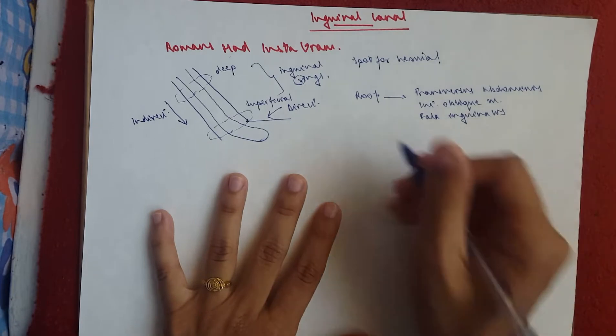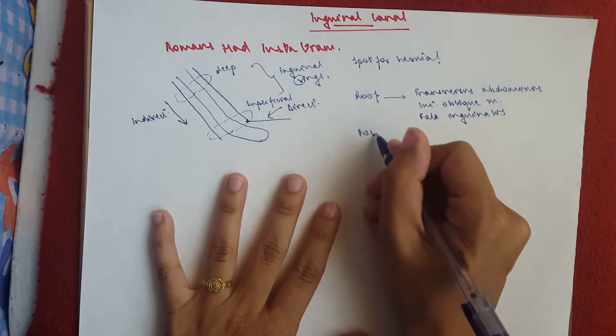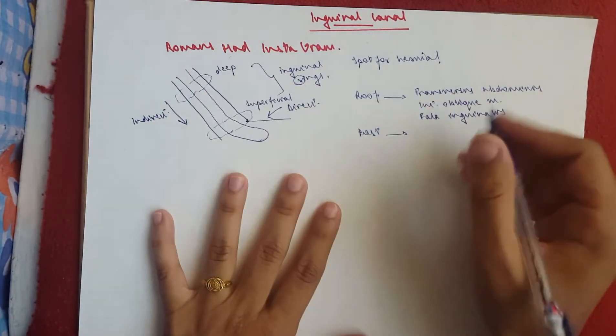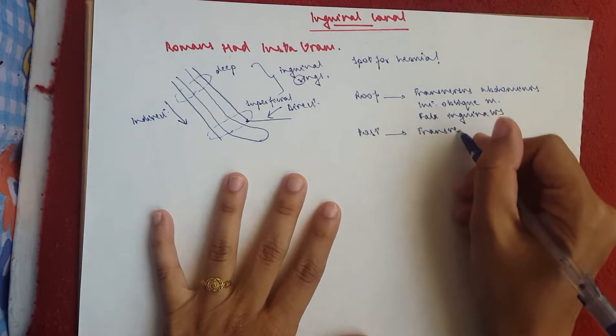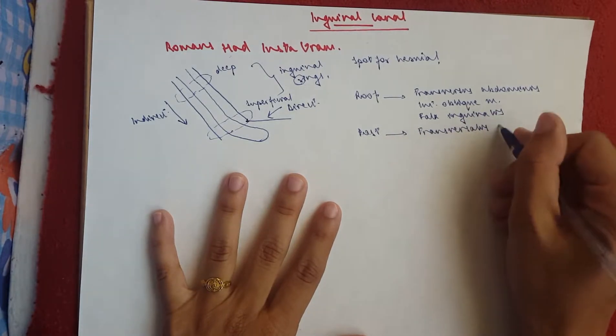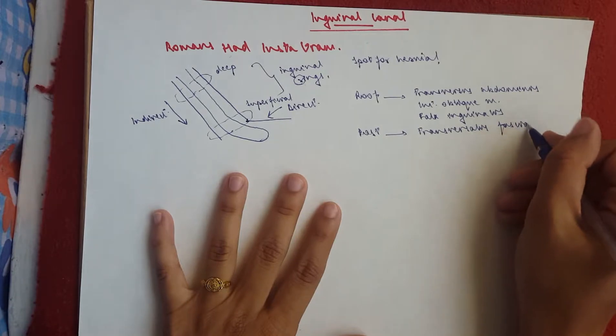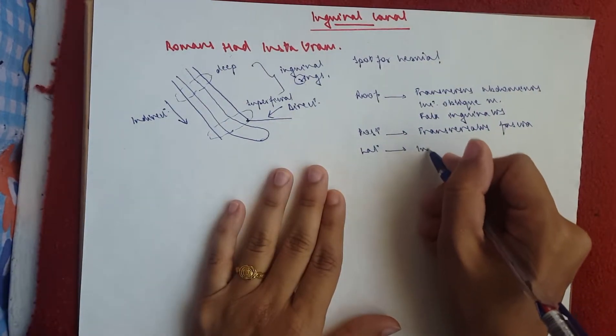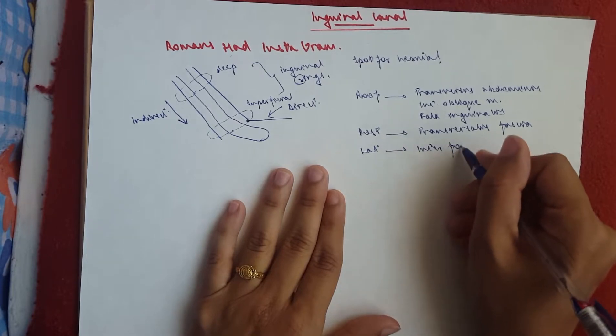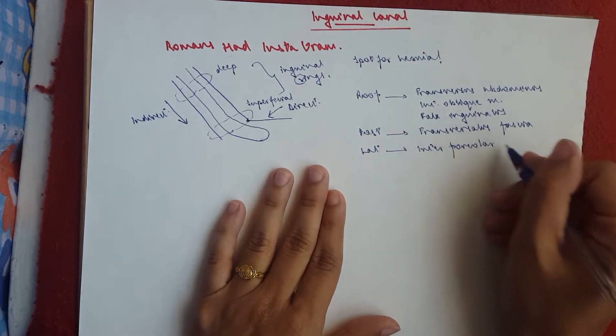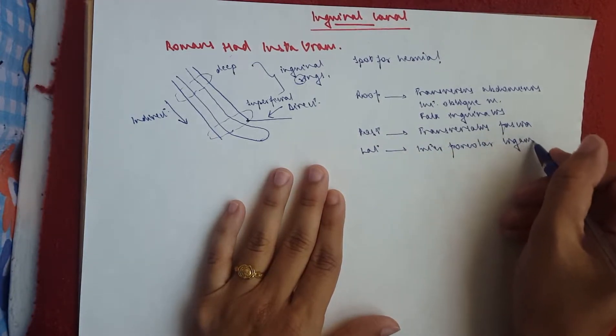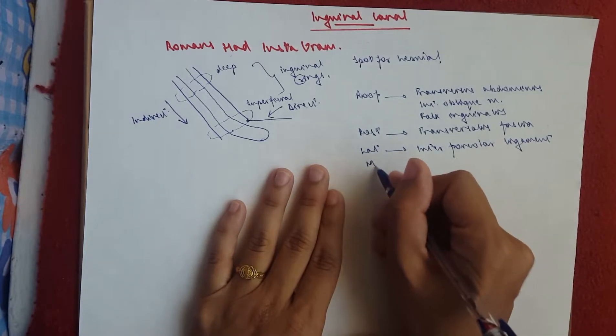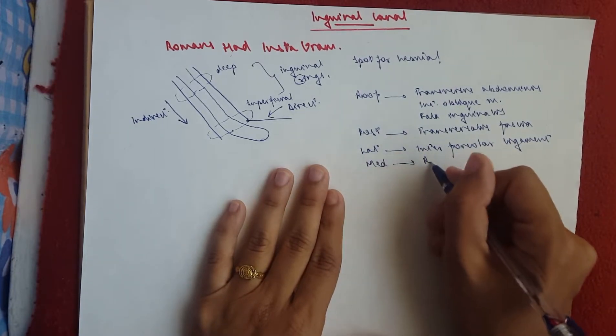All right, then we move on to the posterior side, which would be the transversus fascia. Then the lateral sides would be the inter-faveolar ligament, while the medial would contain the reflected ligament.